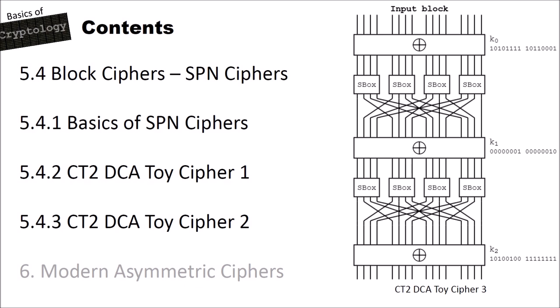Hello and welcome to a new video on the CrypTool 2 YouTube channel and the basics of cryptology series. In this video we want to have a look at block ciphers and in particular at SPN ciphers. SPN stands for substitution permutation network. We'll look at the basics of substitution permutation networks and then at two different toy ciphers that are implemented in CrypTool 2, which you can build by yourself and even perform by hand.